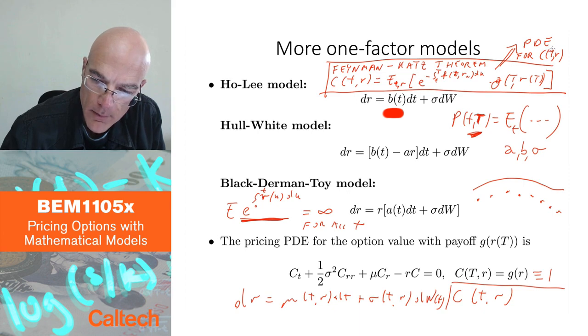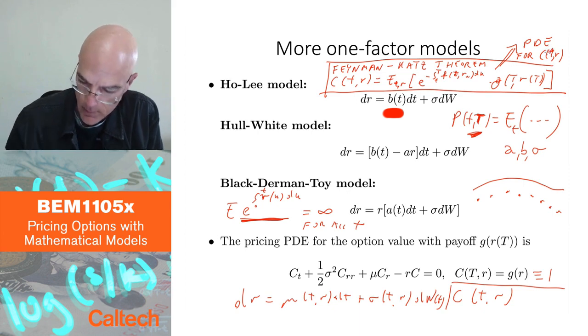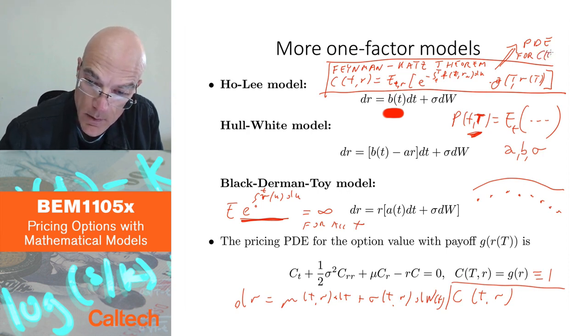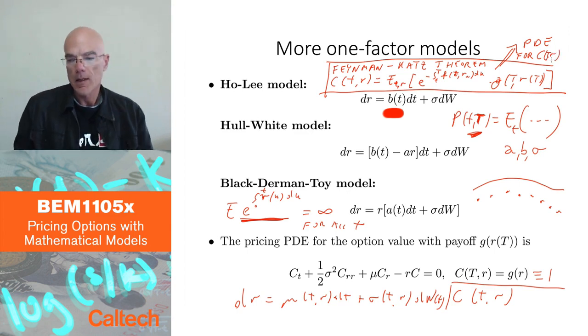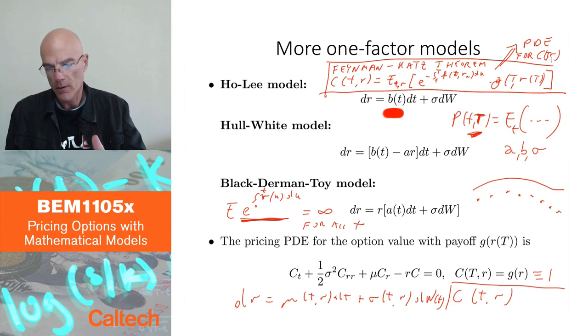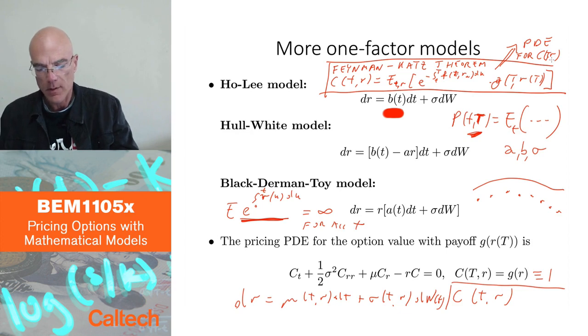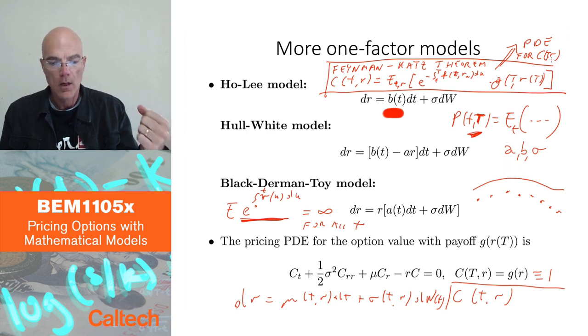then the Feynman-Kac theorem gives you the PDE, partial differential equation, for this function c(T,r). Okay, I'm not going to write the PDE, but this is a special case down here, the one that we have for pricing. So I'm going to write this a little bit nicer for c(t,r). Okay, that's the Feynman-Kac theorem. It tells you, well, I don't give it here in detail, but it tells you, if you have expected values of some functions of a process driven by Brownian motion, then the Feynman-Kac theorem tells you what the partial differential equation for that expected value looks like, right?